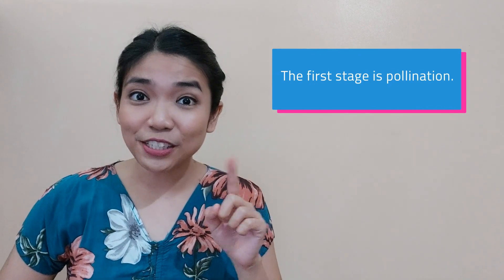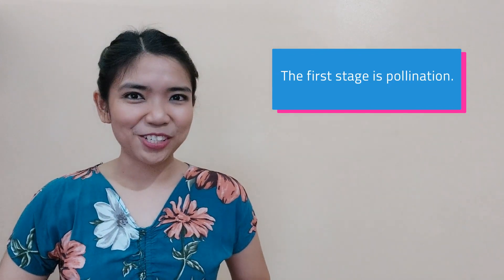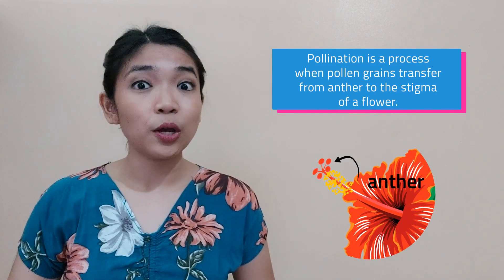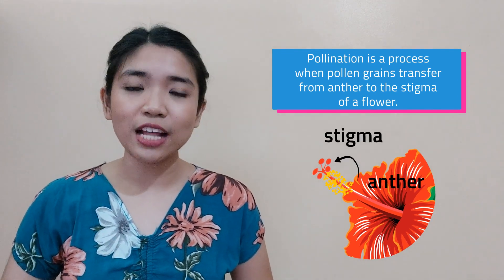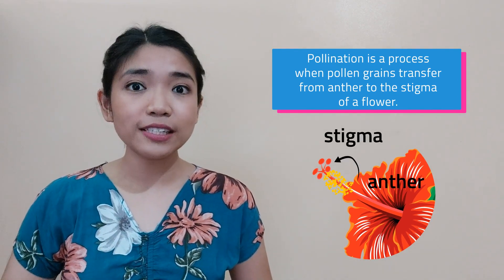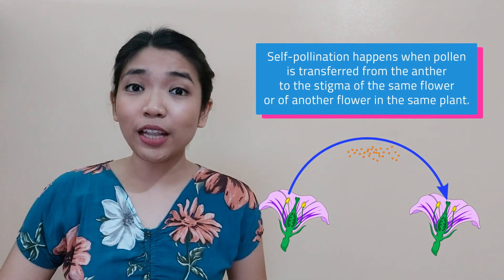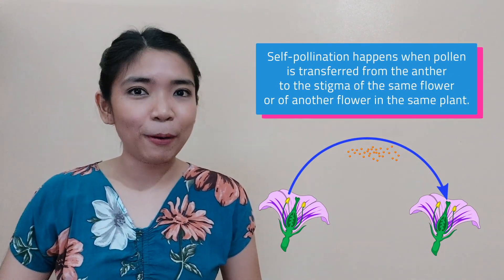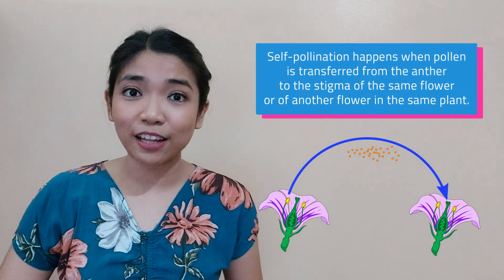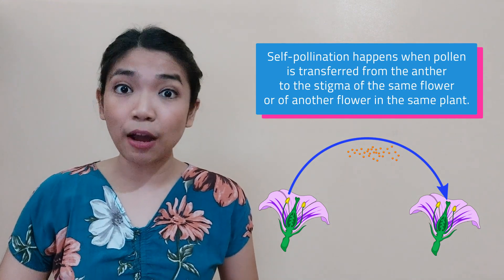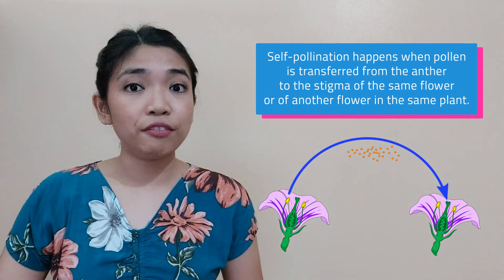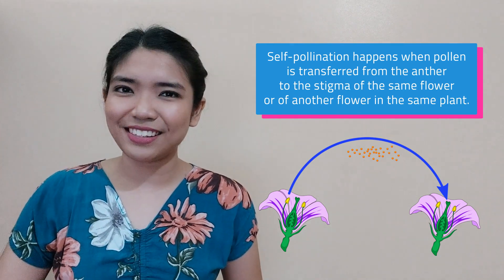The first stage is pollination. Pollination is a process when pollen grains transfer from the anther to the stigma of a flower. Pollination can be in two ways: self-pollination and cross-pollination. Self-pollination happens when pollen is transferred from the anther to the stigma of the same flower or of another flower in the same plant.